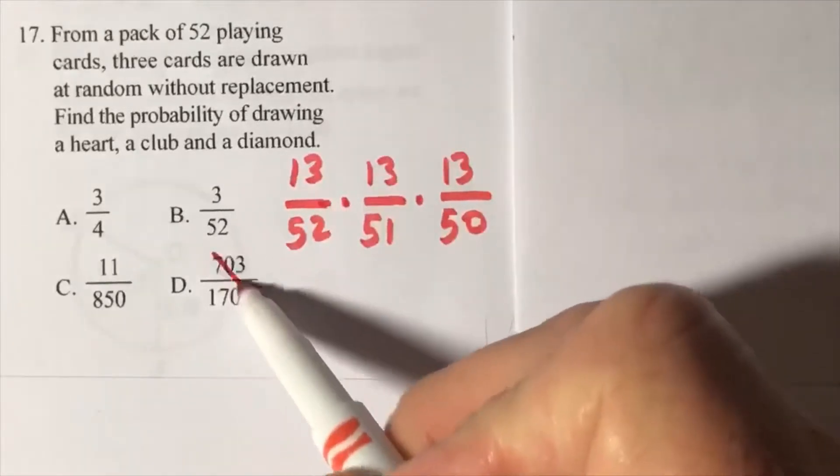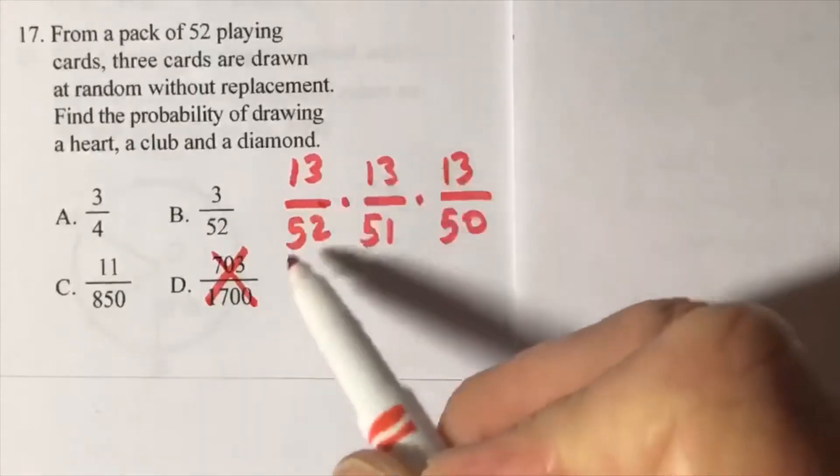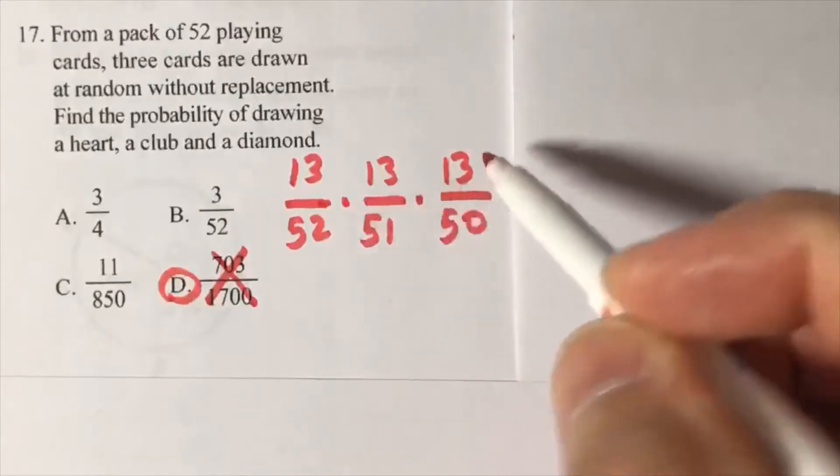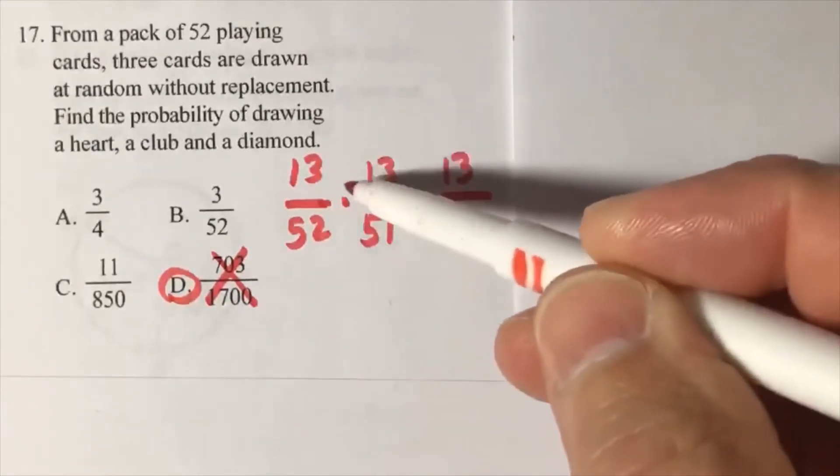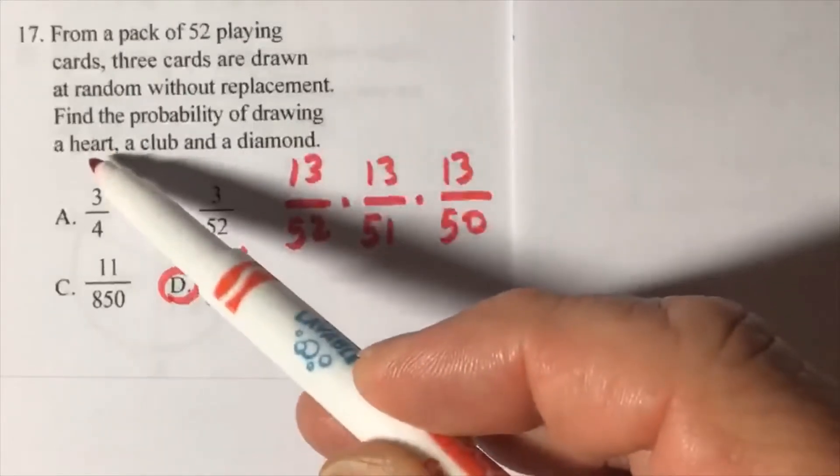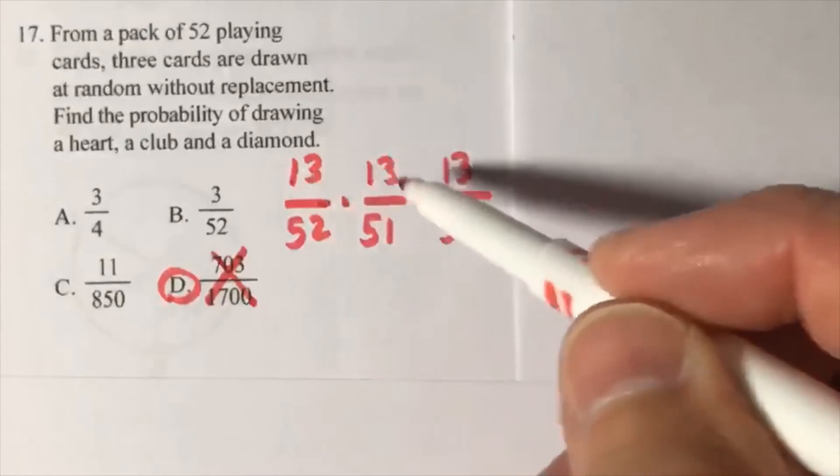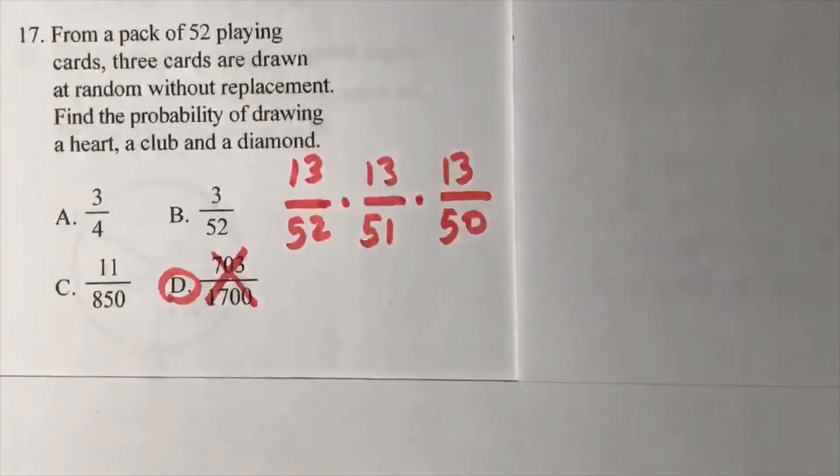Cross this out and put the correct answer in. You will choose this letter, but make sure you are doing this setup because we have a total number of hearts, total number of clubs, and a total number of diamonds in each of our fractions. All right, so finish that problem up.